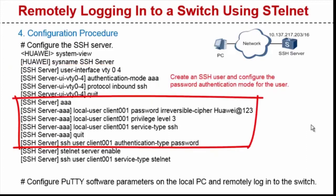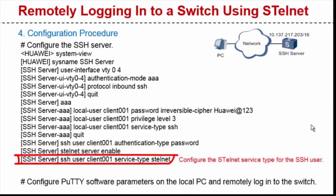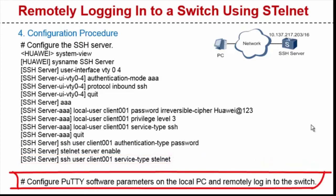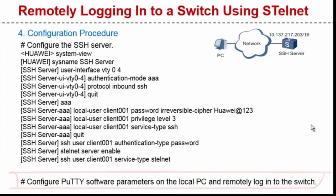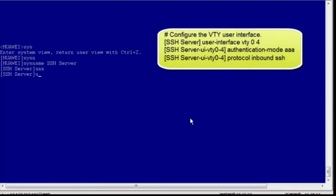Now let's see the configuration procedure: configure the VTY user interface; create an SSH user and configure the password authentication mode for the user; enable the STelnet server function; configure the STelnet service type for the SSH user; configure PuTTY software parameters on the local PC; and remotely log in to the device.